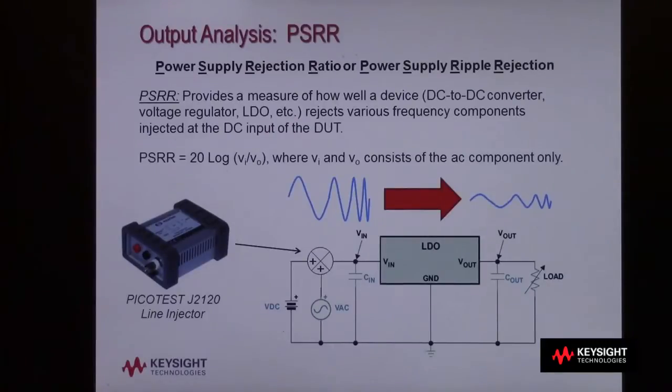In other words, how much of a disturbance signal injected at the DC input reaches the regulated DC output. A sine wave is injected and summed into the DC input and then swept from a low frequency to a high frequency.